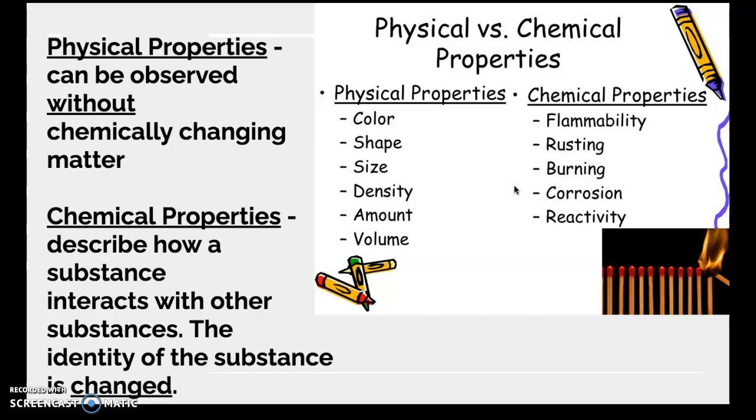Some chemical properties and samples are flammability. So can it catch on fire? How easily is it for it to catch on fire? Rusting or oxidizing? Does it react with oxygen? Burning also, does it react with oxygen in a quick way? Does it burn? Corrosive, is it acidic or very basic? What's the pH of it? And reactivity, how does it react with other substances? So in this case the chemical substance is changed. We have a reaction happening when we observe chemical properties.